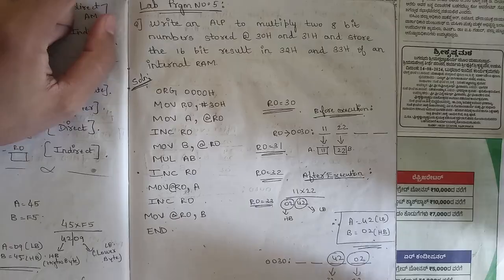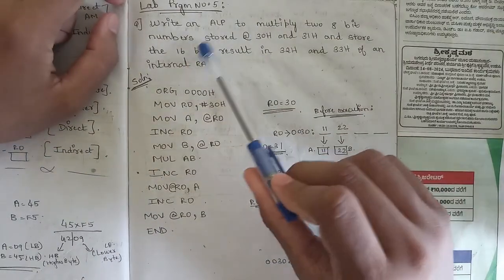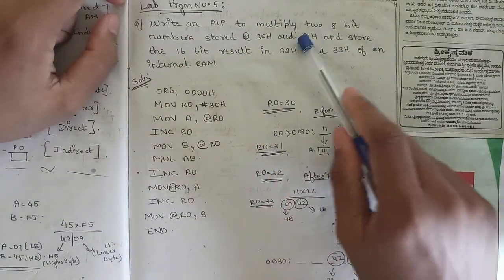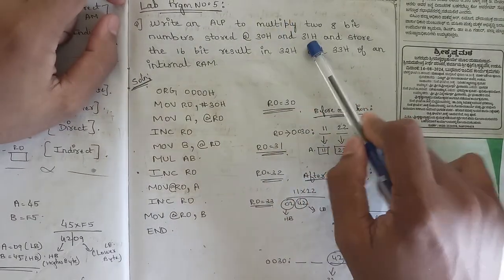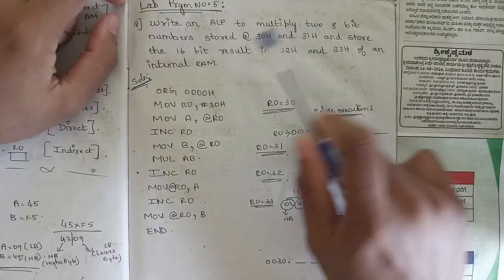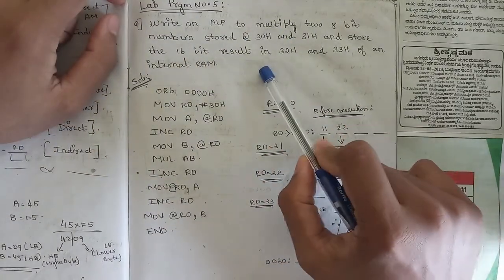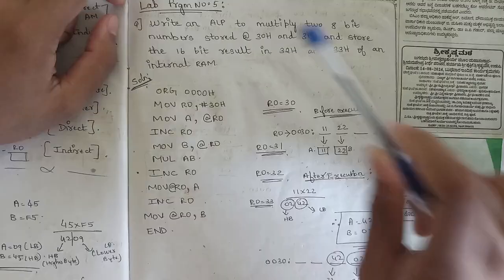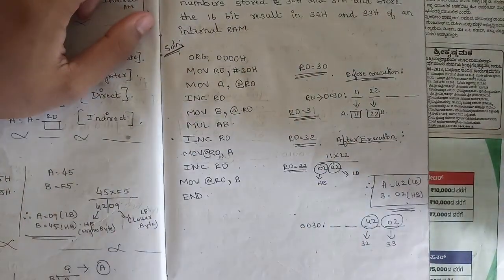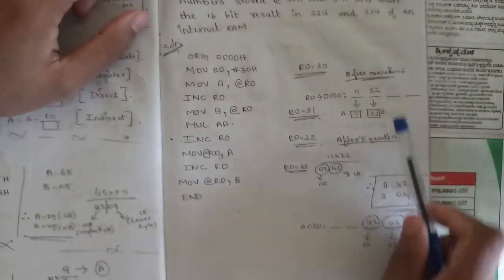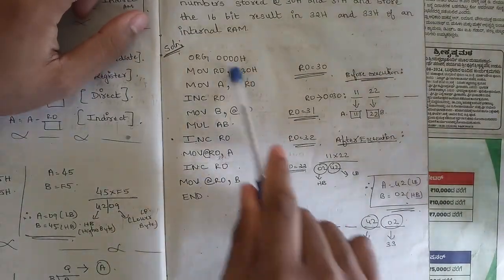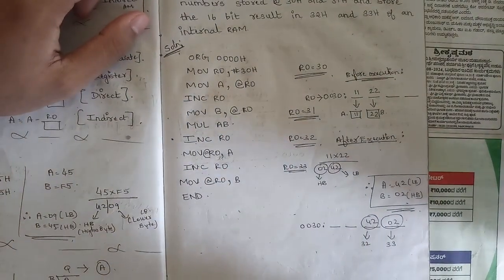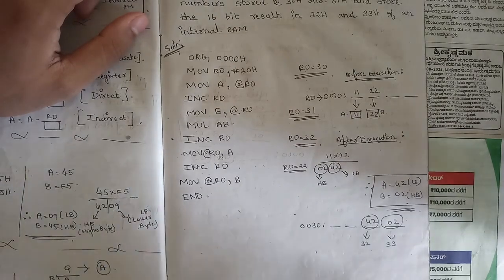Starting with one simple ALP program: write an ALP to multiply two 8-bit numbers stored at address locations 30H and 31H, and store the 16-bit result after multiplication in addresses 32H and 33H. Here this simple assembly language program shows all the before-execution and after-execution steps. The first line is always the assembler directive ORG 00H, meaning the program starts there.